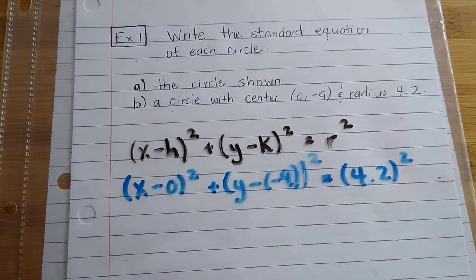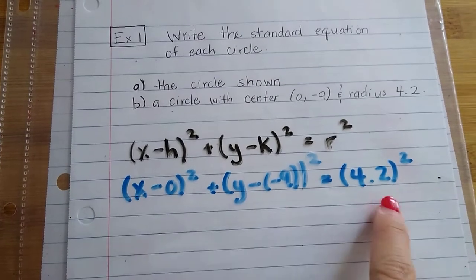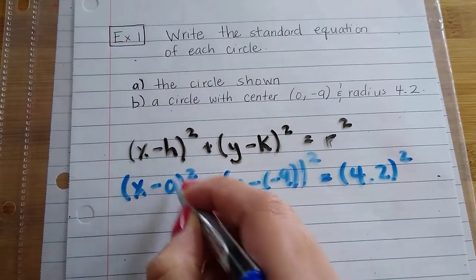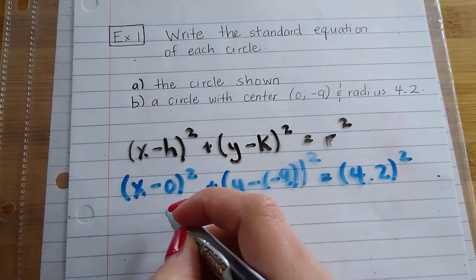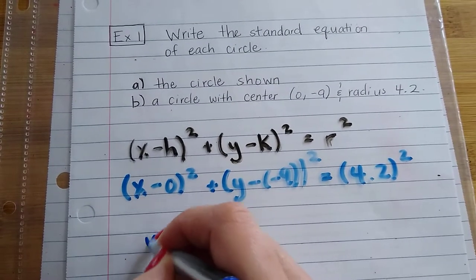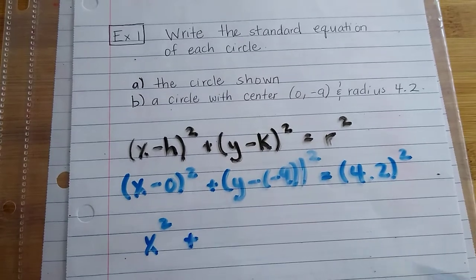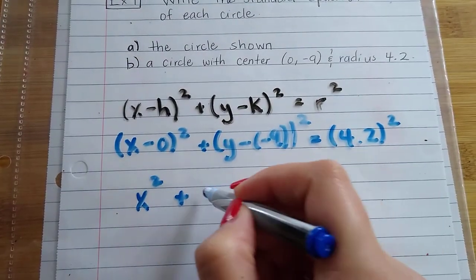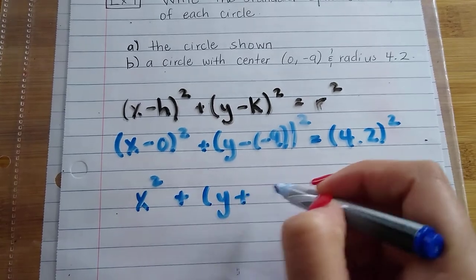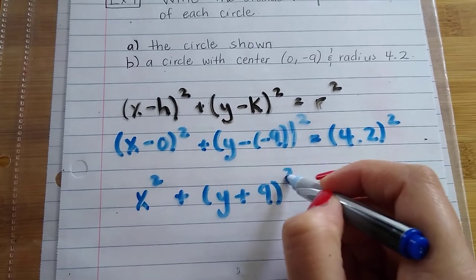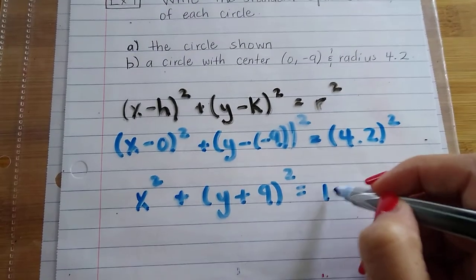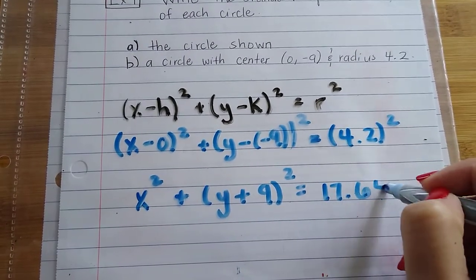I'm going to simplify this and use a calculator to figure out what that is, (4.2)². So here, again, there's 0, so I'm just going to leave it as x² + (y + 9)² = 17.64.